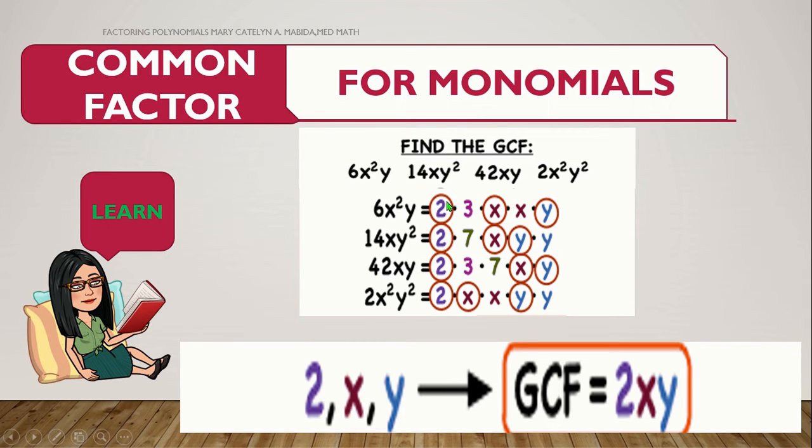Now, we are going to multiply the common among the four, which is 2 times x times y. And so, we get 2xy as their common monomial factor.